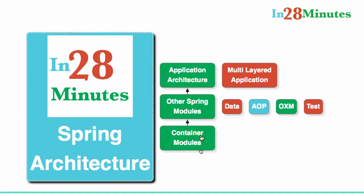These container modules provide dependency injection — that is inversion of control. Later, we would move on to other Spring modules and get an overview of what they do: things like Spring Data, Spring AOP, Spring OXM, and Spring Test. At the end of this video, we would look at application architecture — a multi-layered web application — and how you design it using the Spring framework, including the different options available for designing a multi-layered application with Spring.